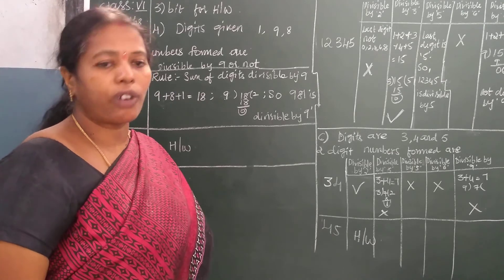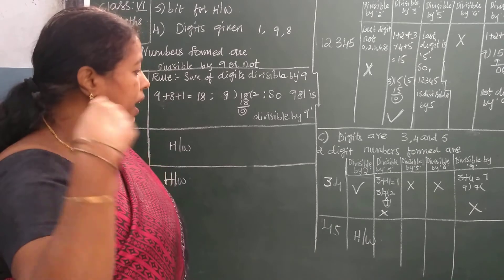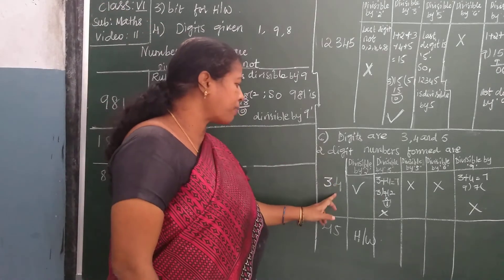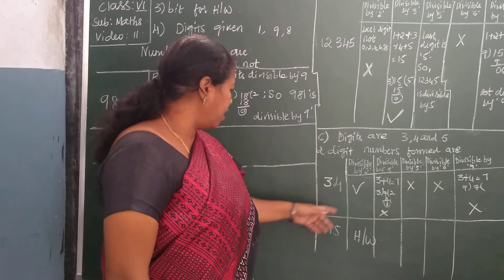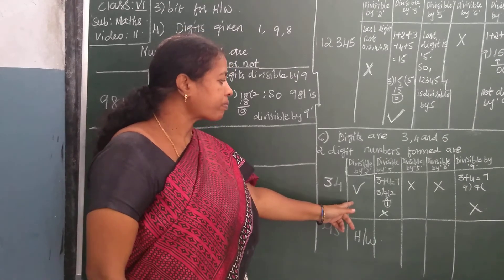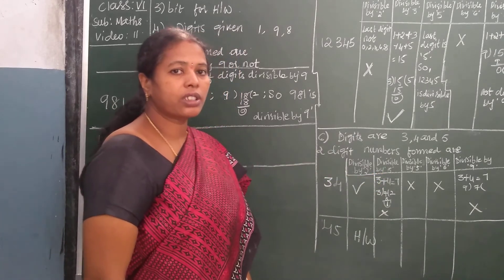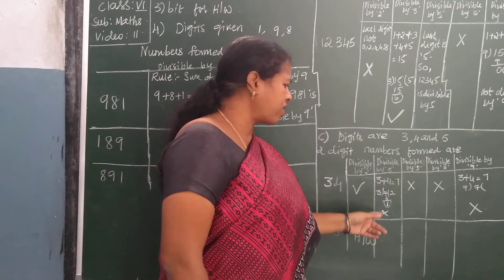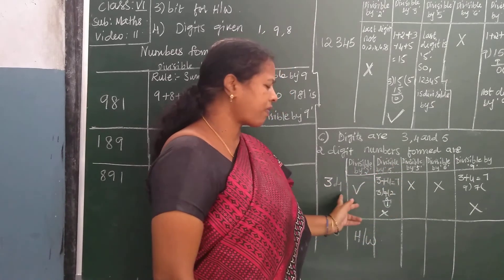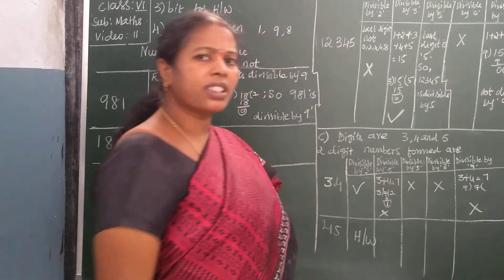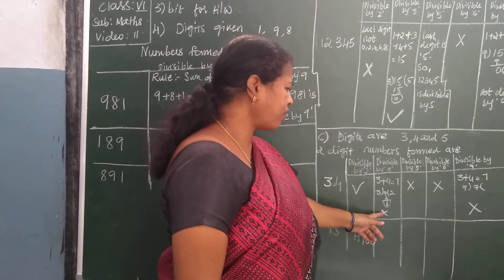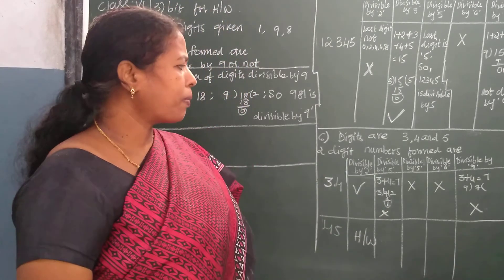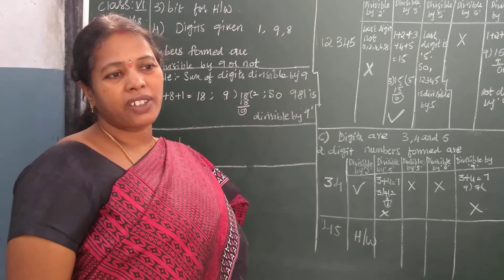For 34: rule for 2 — last digit should be 0, 2, 4, 6 or 8. Last digit is 4, so it is divisible by 2. Rule for 3 — 3 plus 4 is 7. Is 7 in the 3 table? No, so it is not divisible by 3. Rule for 5 — last digit is not 0 or 5, so it is not divisible by 5. Rule for 6 — since it fails the rule for 3, it is not divisible by 6. Rule for 9 — sum of digits is 3 plus 4 equals 7, and 9 is greater than 7, so it is not divisible by 9.